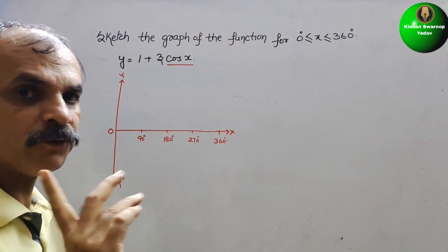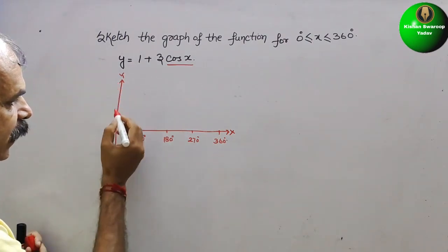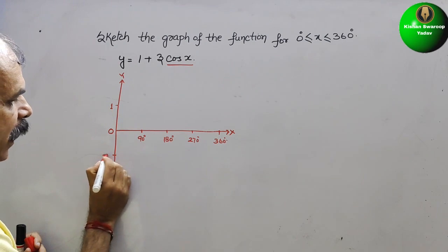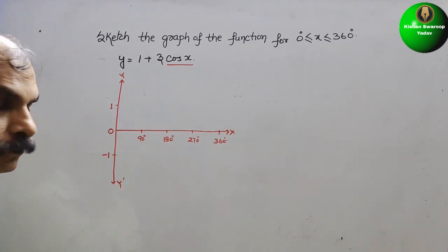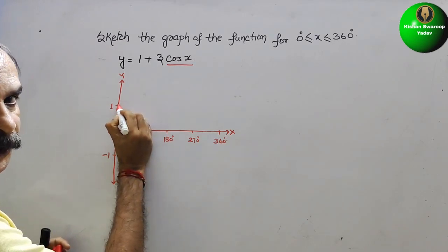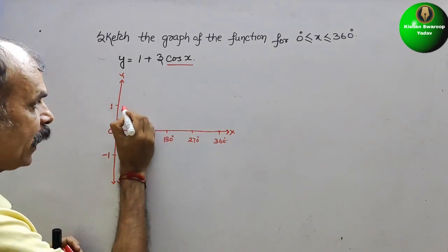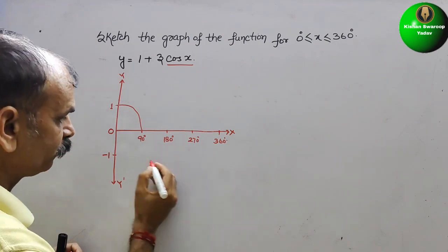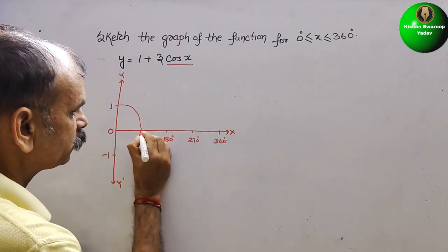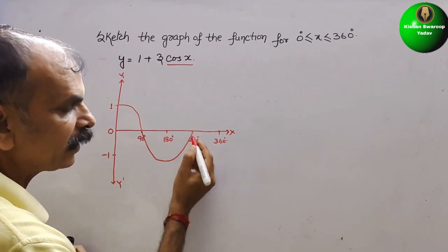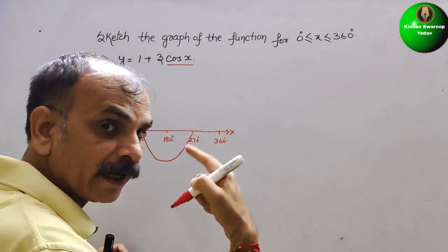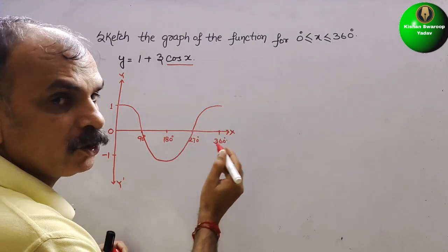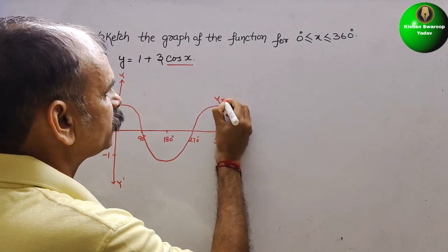We know cos 0° = 1, so mark 1 on the y-axis, and here it will be -1. At 0°, value is 1. At cos 90° = 0, it comes down. At cos 180° = -1, it reaches the bottom. At 270° it is 0 again, and at 360° it returns to 1. This is y = cos x.